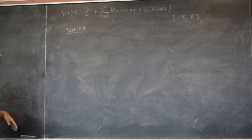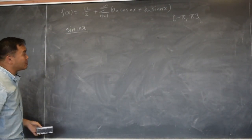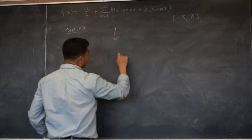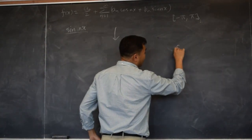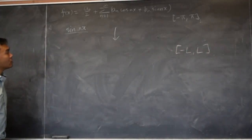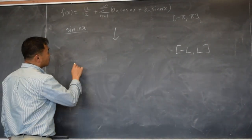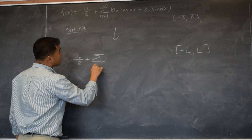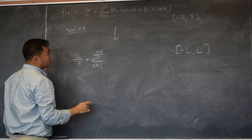But what we need is if we want to change this into generic version that's valid for negative L to L, you want to change these functions in the following way.